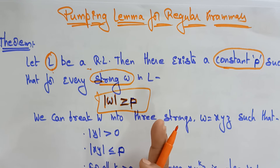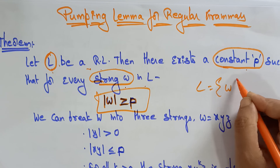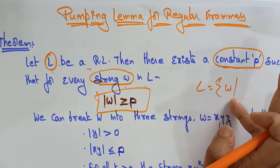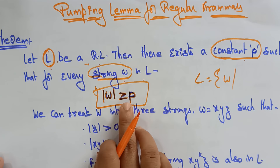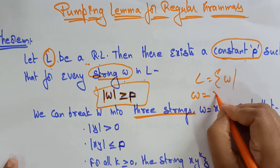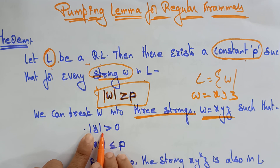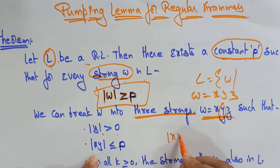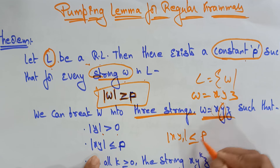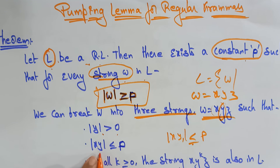Remember this point. In the pumping lemma, if we have taken a language L to be a regular language, then there exists a constant P such that for every string W in L with mod W greater than or equal to P, we can break this string into three substrings X, Y, Z such that it has to follow some conditions. The first condition: mod Y should be greater than 0. The second condition: mod XY should be less than or equal to P.